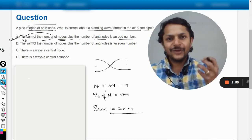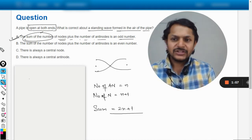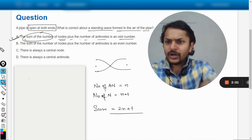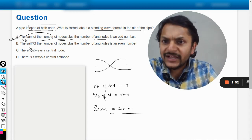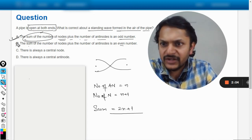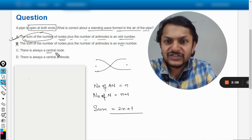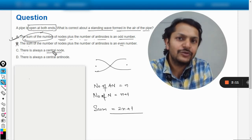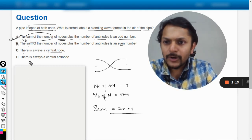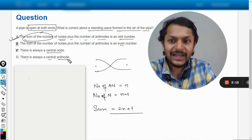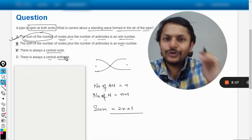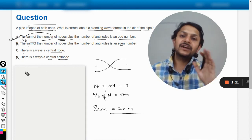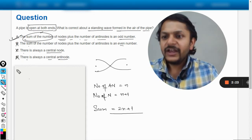The total number of nodes and antinodes is always an odd number. So this is how we do this question, my dear students. You can go through the other options also. The sum is even number, so definitely it is wrong. There is always a central node, it's not always like that. Even in the second harmonic there is an antinode at the center, so C is wrong. There is always a central antinode, well the diagram shown here the center is a node, so D is also wrong. And the answer is A.